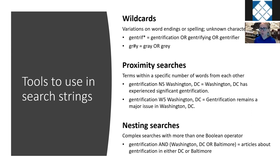Wildcards are a way to address variations on word endings or spellings within words. They can also hold a place for unknown characters within your search terms. For example, typing gentrif* with an asterisk at the end searches for that root plus any potential word ending, giving you results like gentrification, gentrifying, or gentrifier. You can also use the hash mark, typically used for variations on spelling within a word — especially useful for non-American English spellings. For example, gr#y will return both G-R-A-Y and G-R-E-Y.